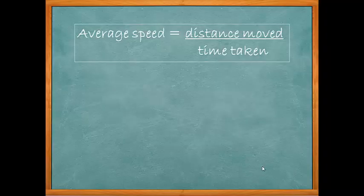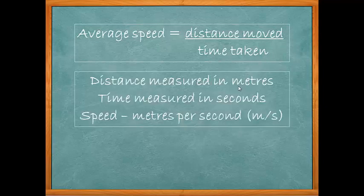Let's start first of all thinking about speed. You need to know this equation. Average speed is given by distance moved divided by time taken. Very simple, distance moved over time taken. Let's think about the units involved here.